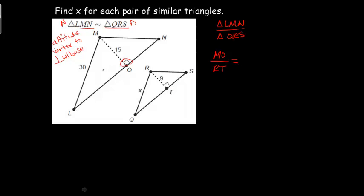I'm going to use this side because that's the one they gave me the measurements for, and that's where x is. ML, probably should be LM, but we'll be okay. So now I'm going to plug in the numbers. So MO is 15, RT is 9, and then ML is 30, and RQ is my x.